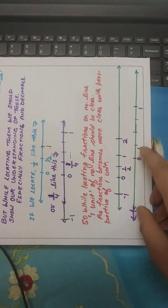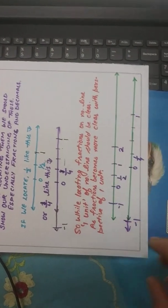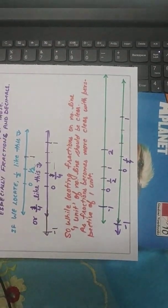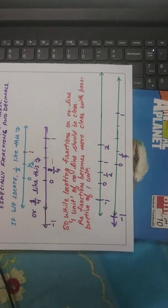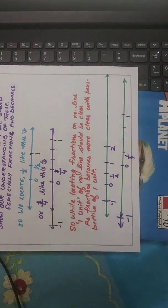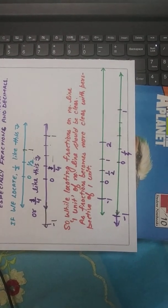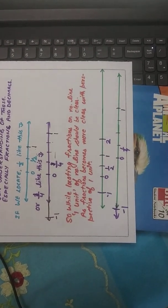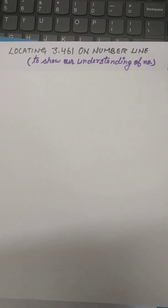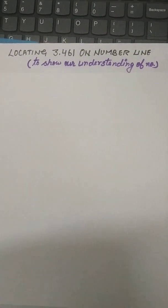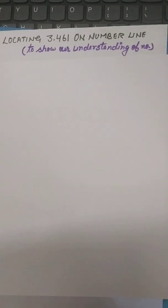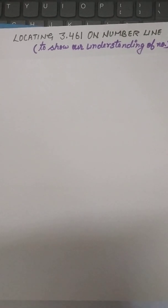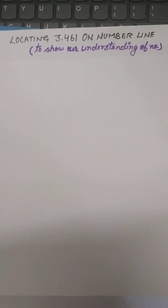If you are locating one-fourth, then it should be zero and one should be there. If you are locating, suppose, three-fourth, then three and four should be there on your number line. Now, let's see how to locate 3.461 on number line. Objective is again the same to show our understanding of numbers.